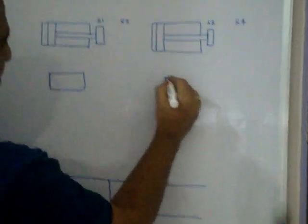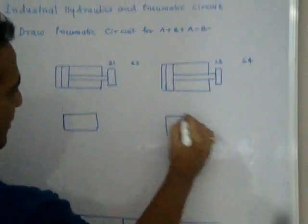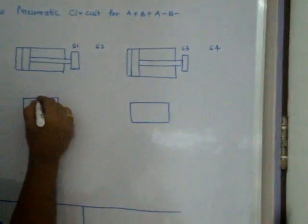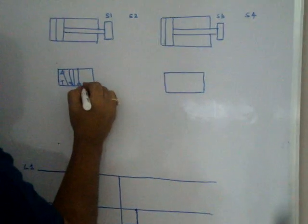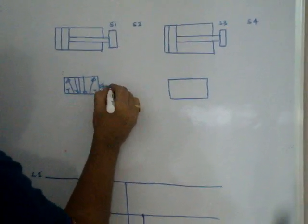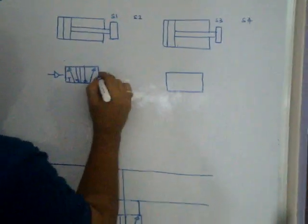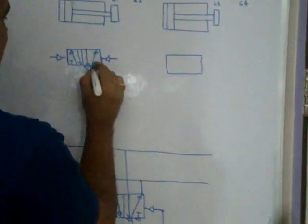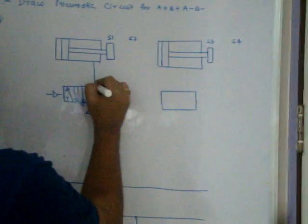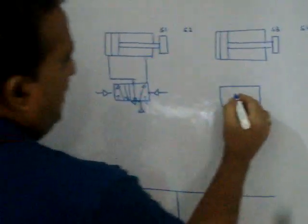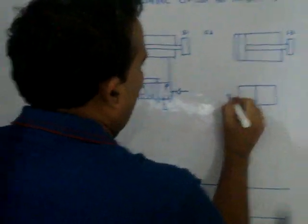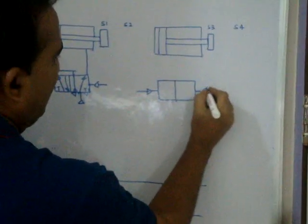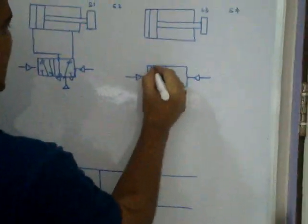To operate the first cylinder, one more 5/2 pilot-operated valve is required. To operate the second cylinder, one more 5/2 pilot-operated valve is required. Here also the compressor and muffler are required. One more 5/2 valve is needed to control the direction of the second cylinder.